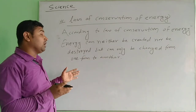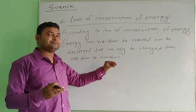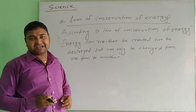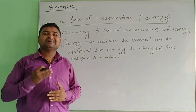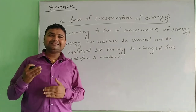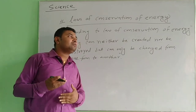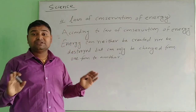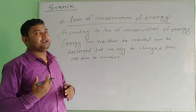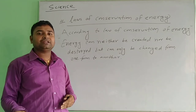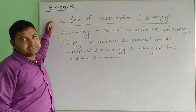For example, in an electric bulb: electrical energy is passed, and that electrical energy is changed into light energy, and light energy changes into heat energy. In this way, energy is never destroyed but can be changed from one form to another form. That is the law of conservation of energy.